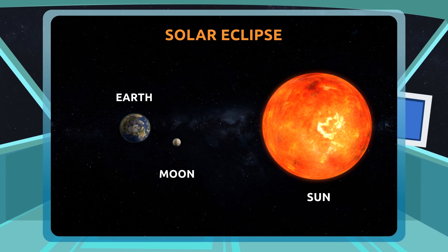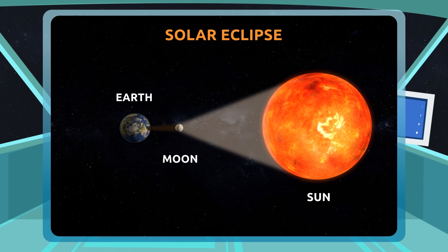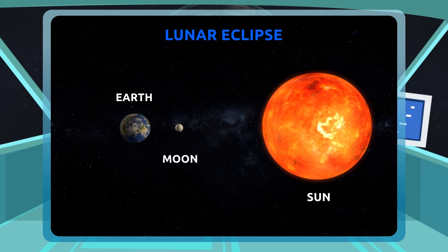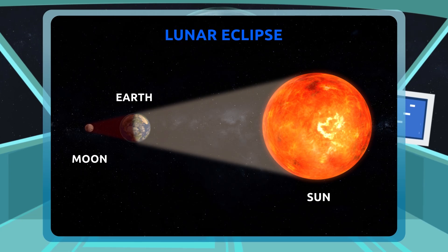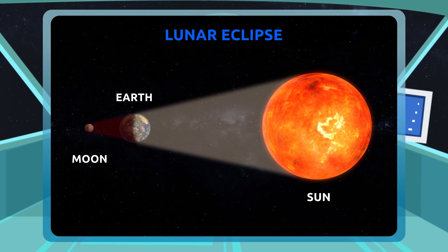Solar eclipses occur when the Moon comes between the Sun and the Earth, forming a shadow that covers the Earth's surface. Lunar eclipses happen when the Earth comes between the Sun and the Moon, forming a shadow that covers the lunar surface, changing the color of the Moon to copper red.